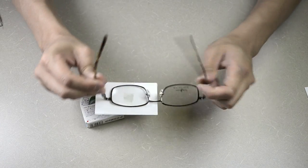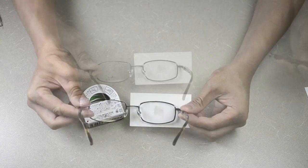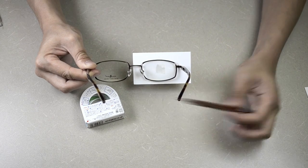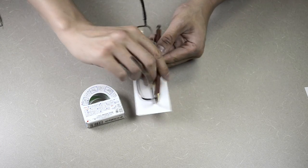So what we're trying to do here is just trace the shape of the actual frame front. Simply take your pen and we'll trace around the frame.